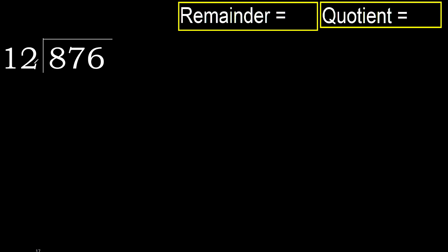876 divided by 12. 8 is less, therefore next. 87 is not less, therefore work with 87. 12 multiplied by which number is nearest to 87, but not greater?